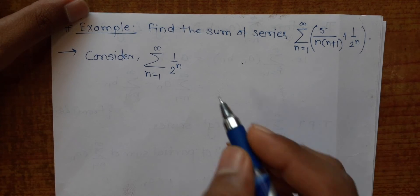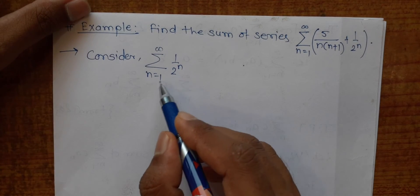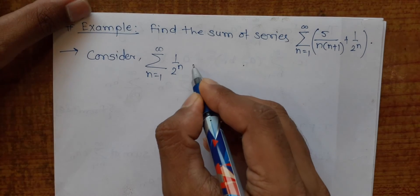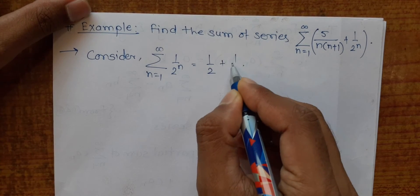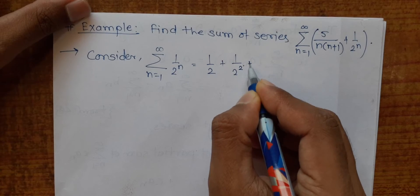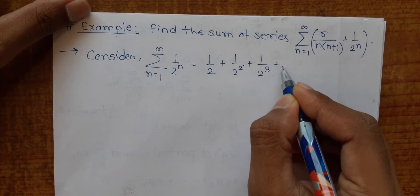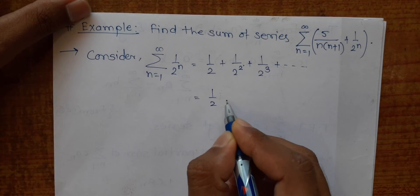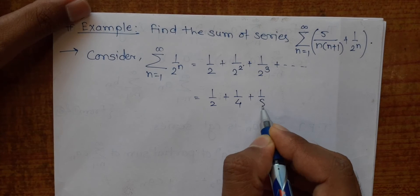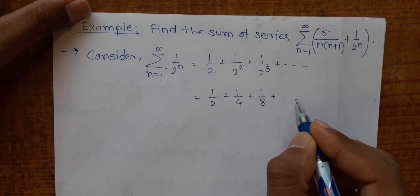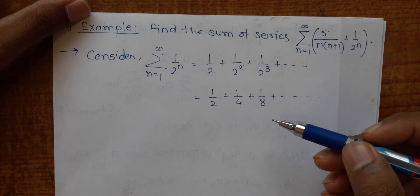Let us find where it converges by expanding this series. If you put n=1 you get 1/2, if n=2 you get 1/2², n=3 gives 1/2³, and so on. So the actual series is 1/2 + 1/4 + 1/8 + ... and this is a geometric series, since multiplying each term gives you the next term.